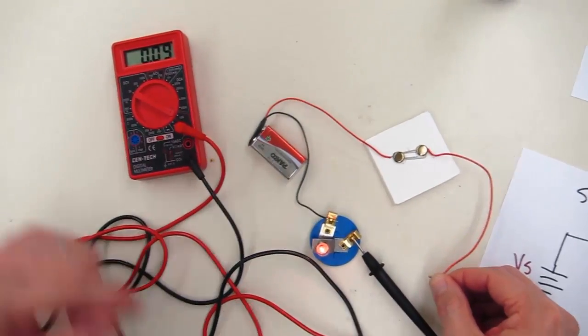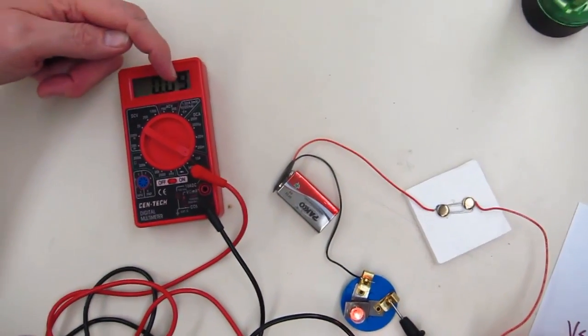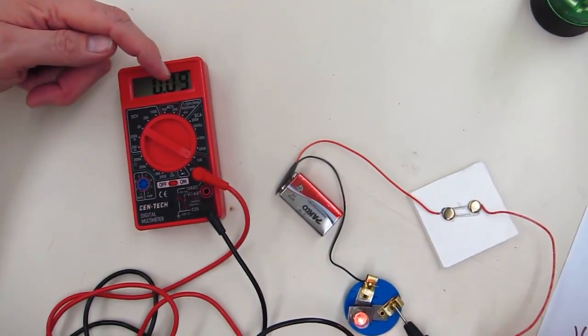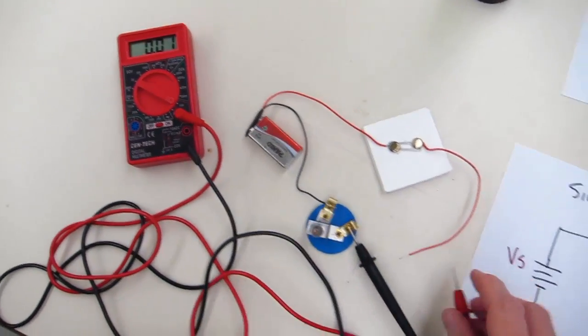Now it's powered up, and so it's measuring the current in the line, and in this case it's 0.09 amps. Otherwise, 90 milliamps approximately. And so that measurement we'll come back to in just a second.